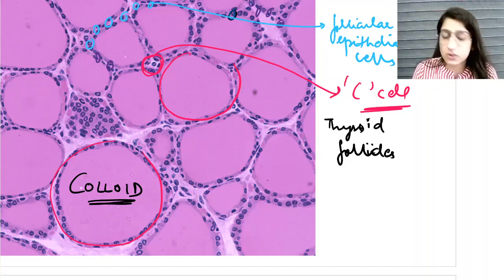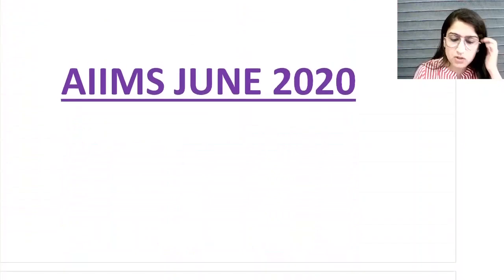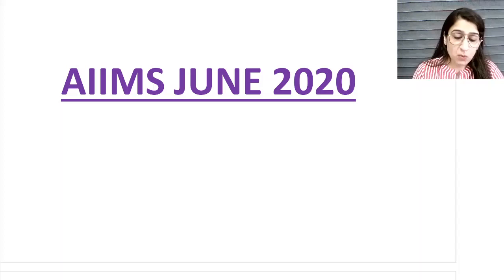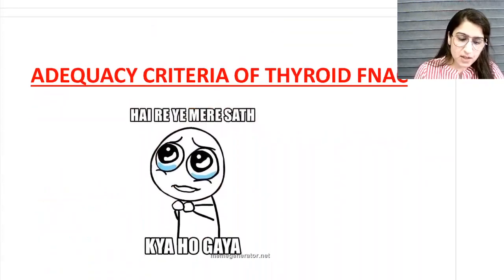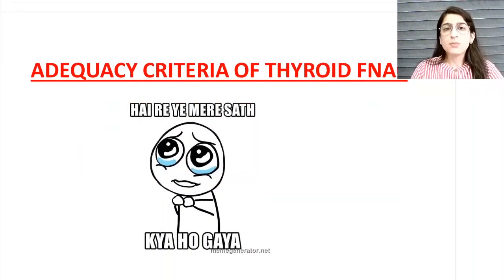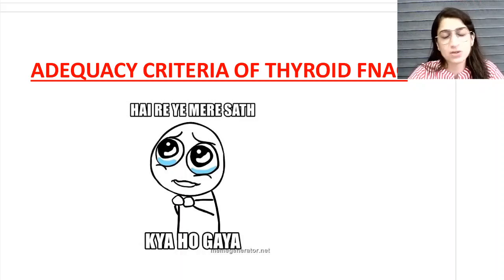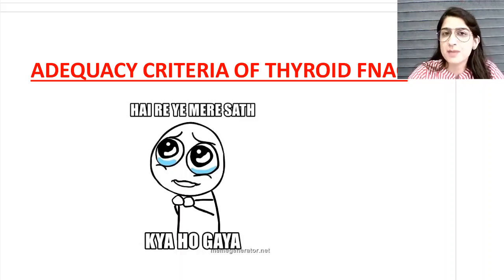After knowing the normal histology, we move to the AIIMS question - the recent question asked in the AIIMS June 2020 exam. The question was: what is the adequacy criteria of thyroid FNAC? I was approached by a lot of students at that time, and I totally agree that this cytology topic is not meant for undergraduate level - it is postgraduate level - but since AIIMS people have asked about it, we have to know it.